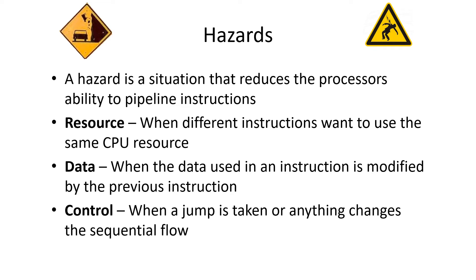Data hazards occur when the data you need from one instruction is being used by a previous instruction and the result has not yet been stored. A control hazard happens with a jump — if you change the flow of execution, the pipeline instructions that have already been picked up and started to be processed will have to be discarded.